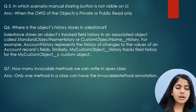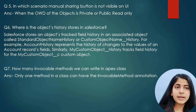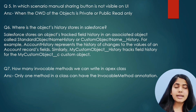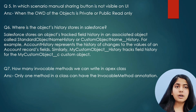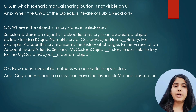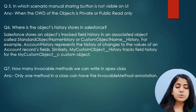The next question was: where is the object's history stored in Salesforce? If we are modifying any fields of an object and want to track what the previous value was and what it changed to, Salesforce provides history tracking for every object. For example, Account has an Account History object, and custom objects have their own history objects as well. We can track field value changes from there.